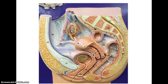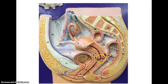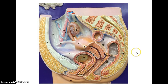Let's go through the parts one more time: we have the ovary, the fimbriae, the oviducts, and the uterus. Within the uterus we have the endometrium, the myometrium, and the cervix. Then the vagina, the hymen, and the vulva. Within the vulva we have the clitoris, the labia minora, and the labia majora. Those are the parts you'll need to know for the female.